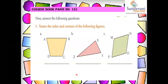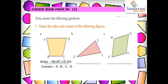Next, answer the following question: name the sides and corners of the following figures. Now we have all learned about sides. For the first figure, the sides would be AB, BC, CD, and AD. And the corners would be A, B, C, and D.